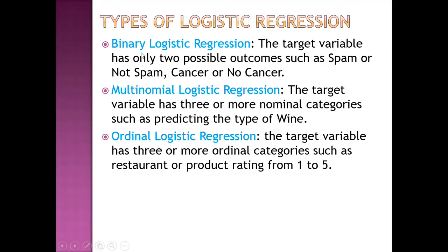Types of logistic regression. First, binary logistic regression — this is the usual type, where the target variable has only two possible outcomes, such as spam or not spam, cancer or no cancer. Then multinomial logistic regression, where the target variable has three or more nominal categories, such as predicting the type of wine. Then ordinal logistic regression, where the target variable has three or more ordinal categories, such as restaurant or product rating from 1 to 5.